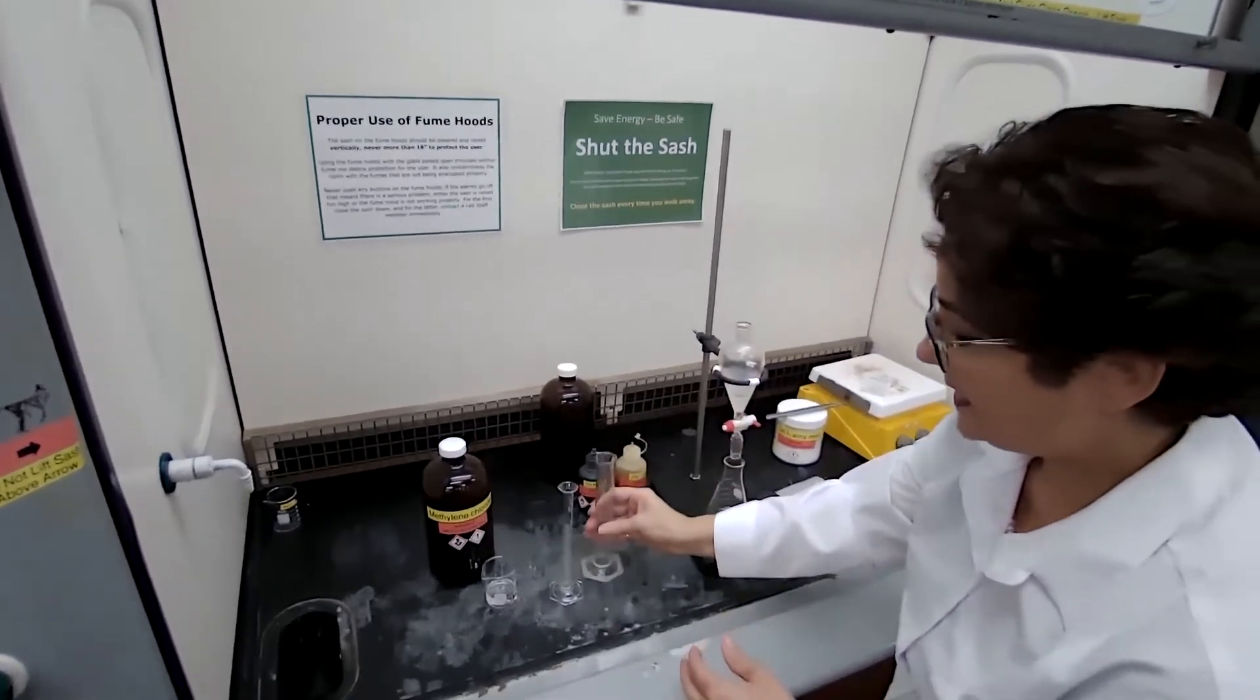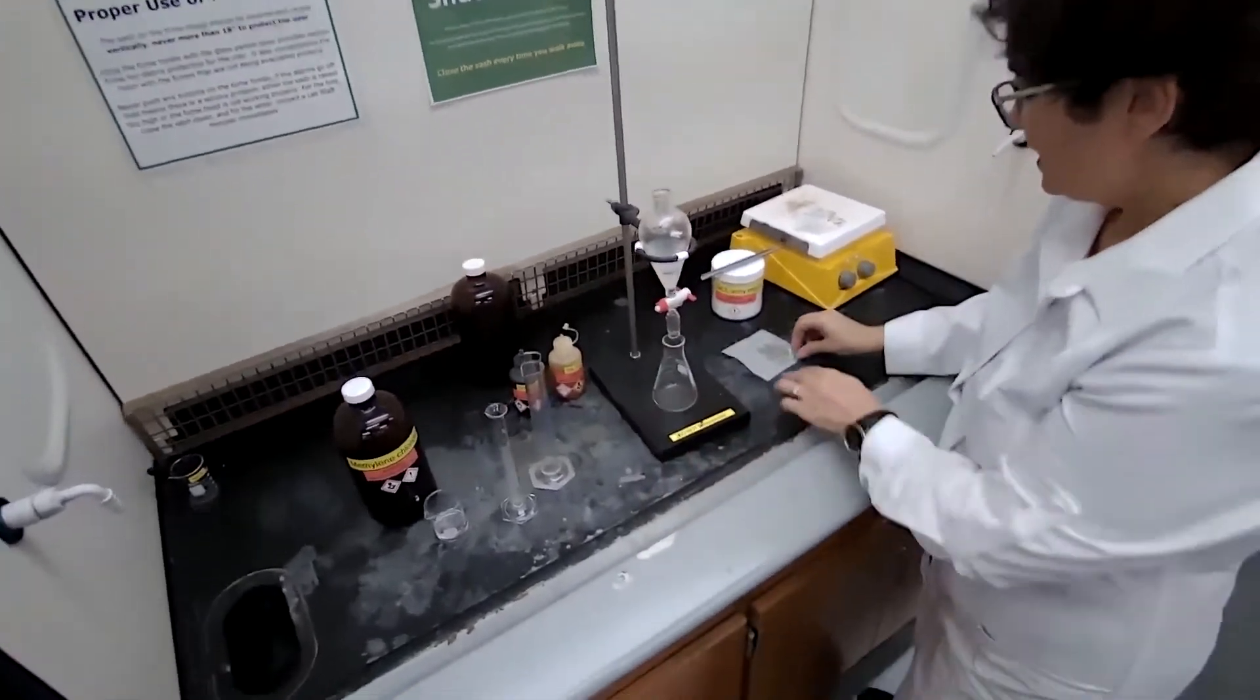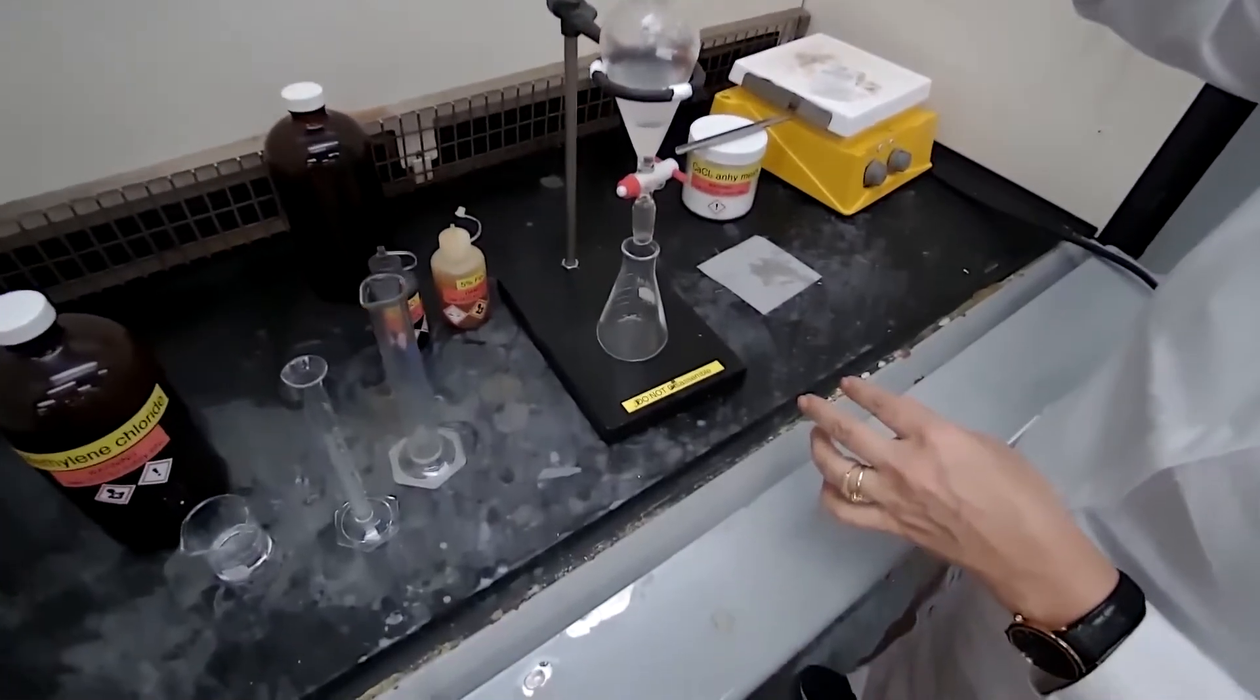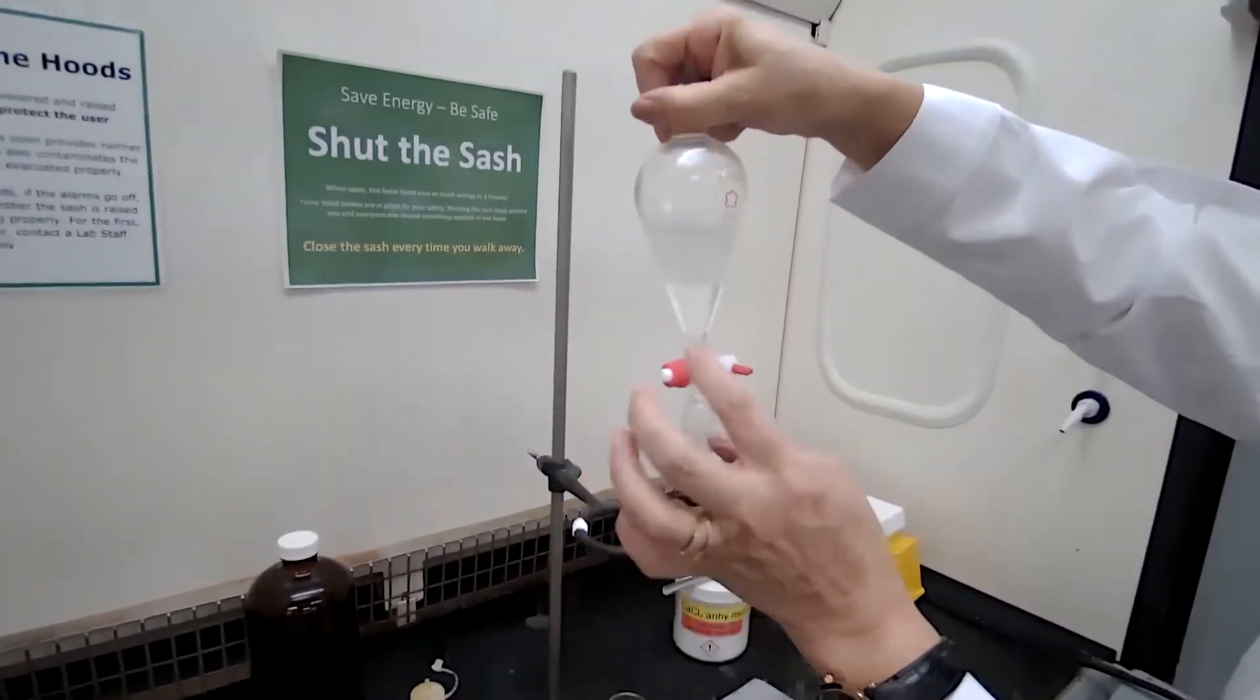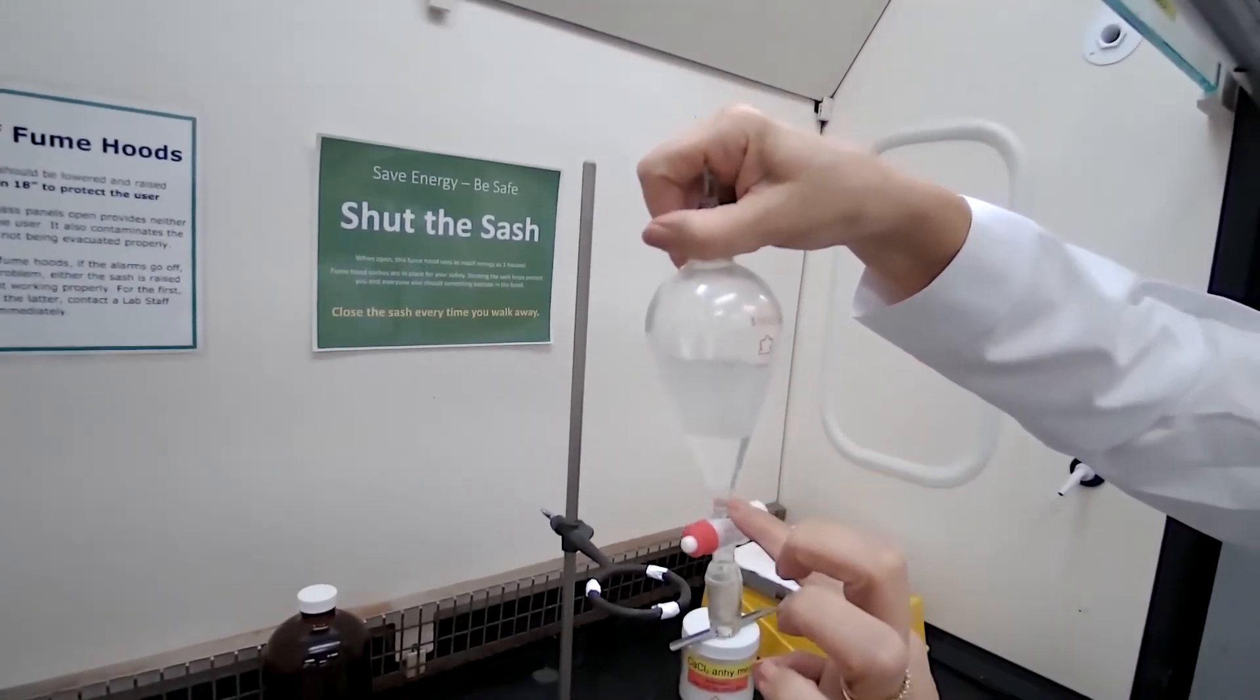The first thing about methylene chloride is that I'm using as extracting solvent. Because it has higher density, it's going to go to the lower level.